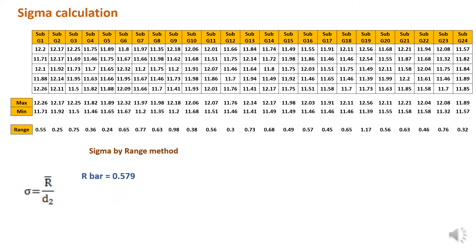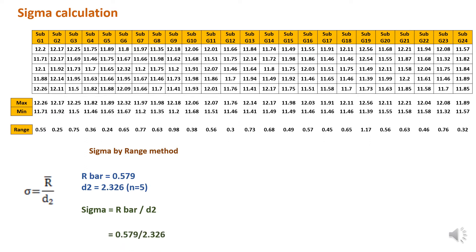The R-bar comes to 0.579 for this case. The d2 is a constant taken from the table based on the subgroup size. For this case n equals 5, so d2 equals 2.326. Sigma is then calculated using the formula R-bar divided by d2, and the sigma value is 0.249.